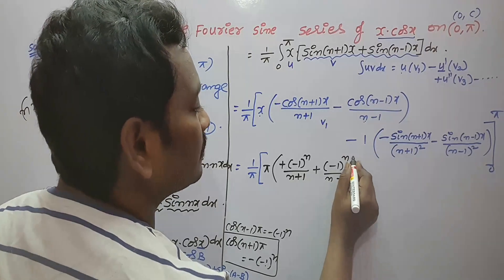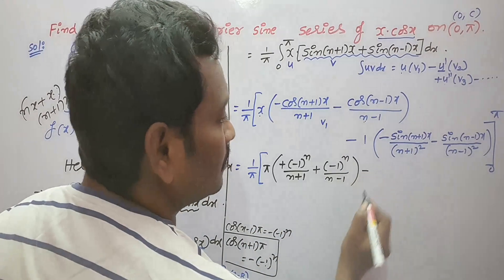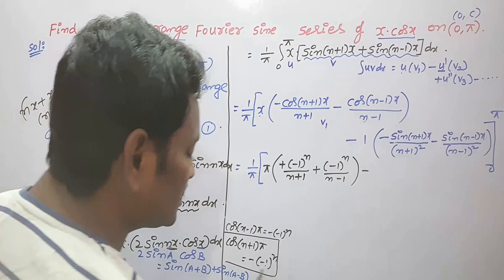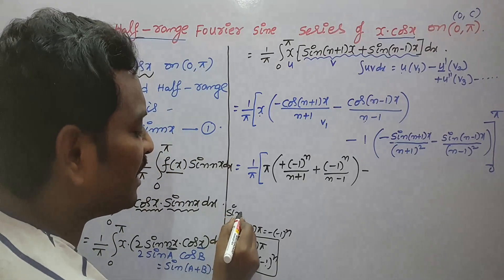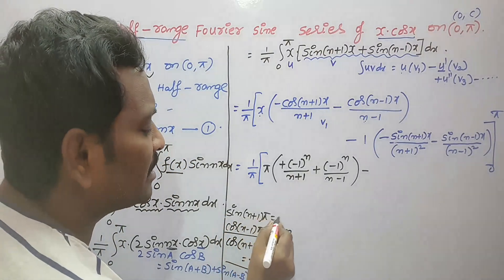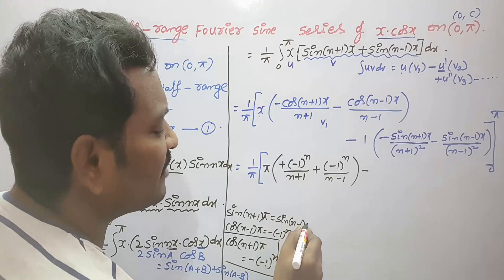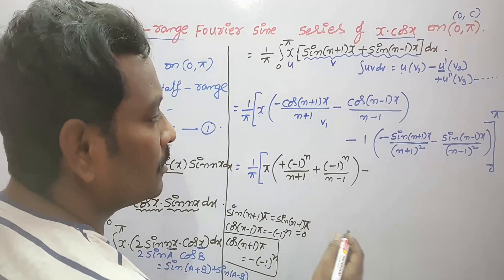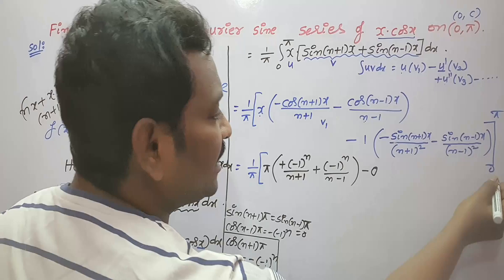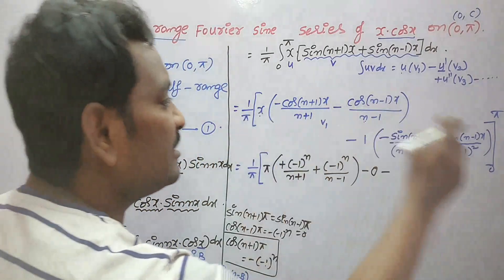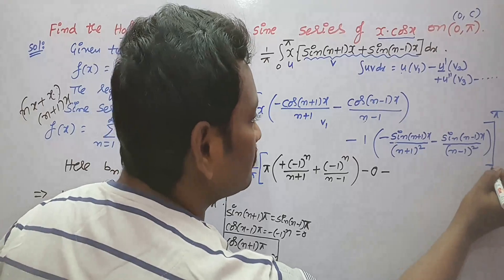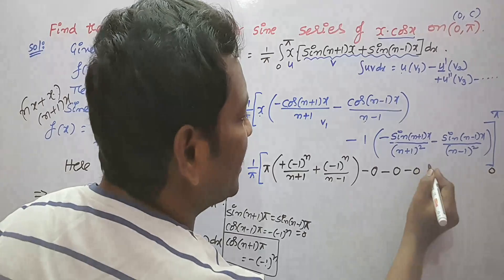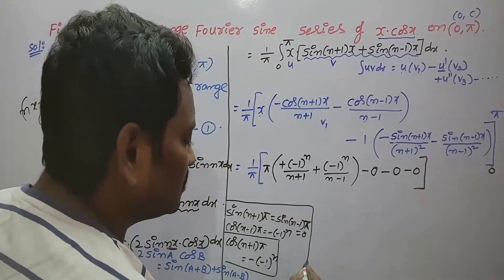For the sine terms: sin((n+1)π) = 0 and sin((n−1)π) = 0, so those terms vanish. Applying the lower limit x = 0: x = 0 makes the x·(cosine) terms zero, and sin(0) = 0, so all lower-limit terms are zero.